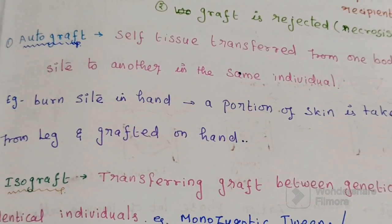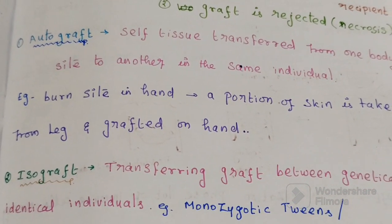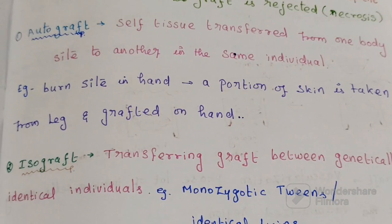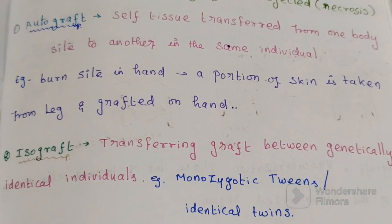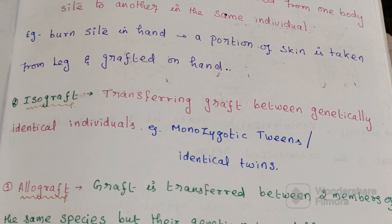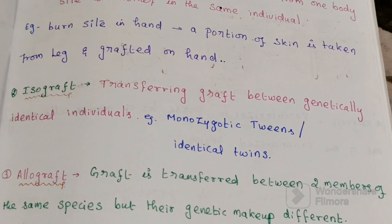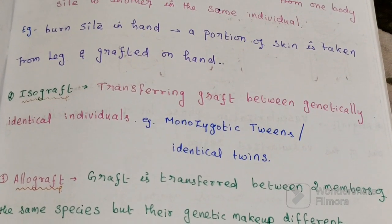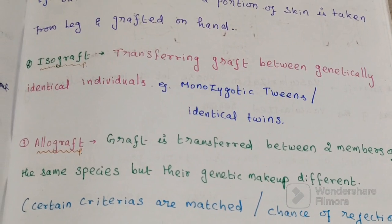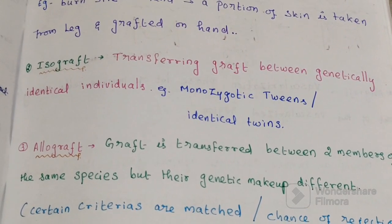An isograft means transferring the graft between genetically identical individuals — for example, monozygotic twins or identical twins. Then there is the allograft. An allograft is a situation where the graft is transferred between two members of the same species, but their genetic makeup might be different. The chance of rejection of an allograft is pretty high.